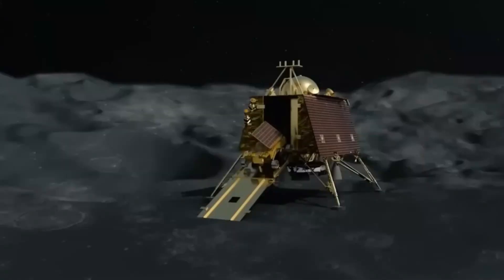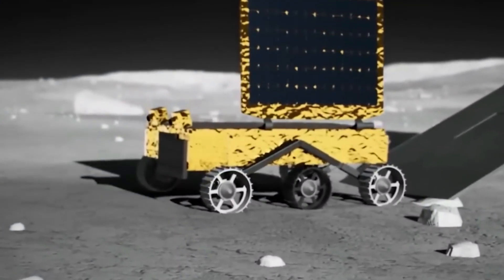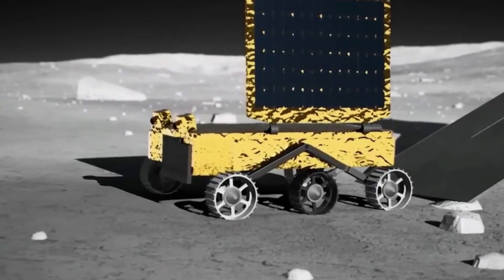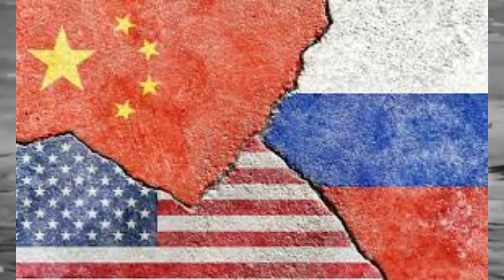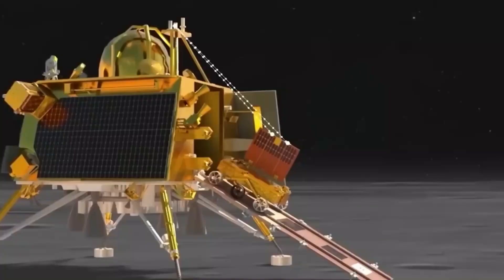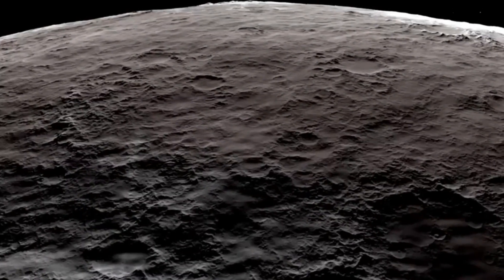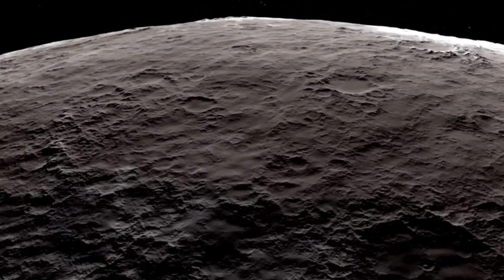Despite these challenges, Chandrayaan-3 successfully landed near the lunar south pole on August 20, 2023. It became only the fourth country in history to achieve a soft landing on the moon after USA, Russia, and China. It also became the first mission to land near the lunar south pole, a region that has never been explored before.